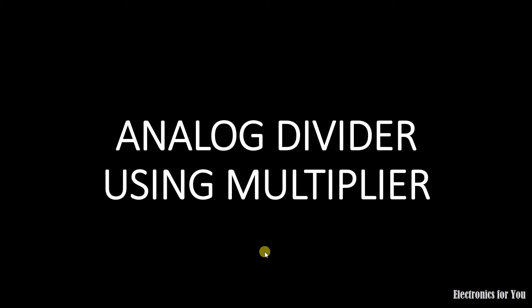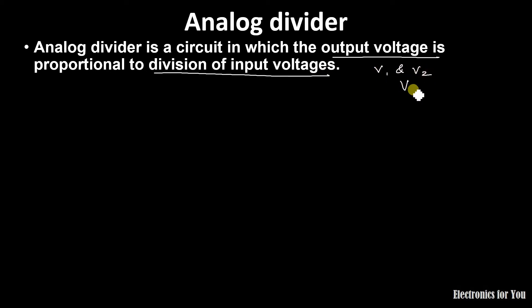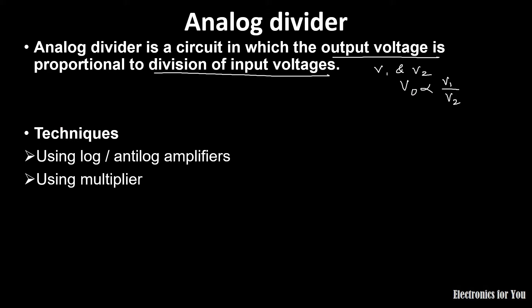Hello friends, in this video we will understand analog divider using multiplier. An analog divider is a circuit in which the output voltage is proportional to the division of input voltages. If our input voltages are V1 and V2, then output voltage V0 will be directly proportional to V1 upon V2, or it may be V2 upon V1, depending on where we are applying V1 and V2.